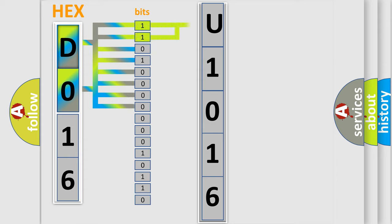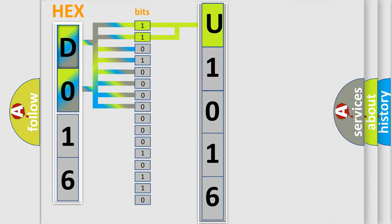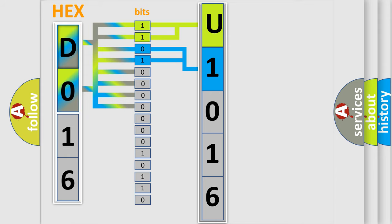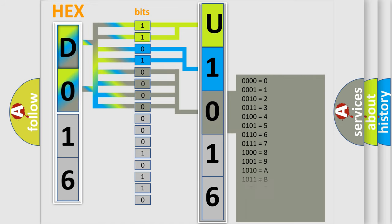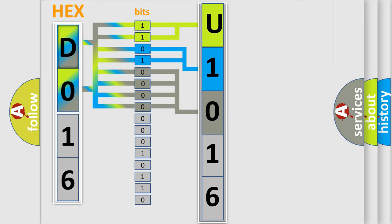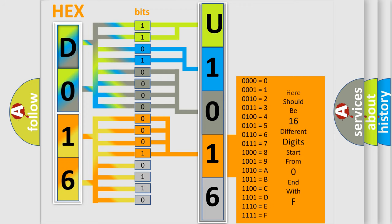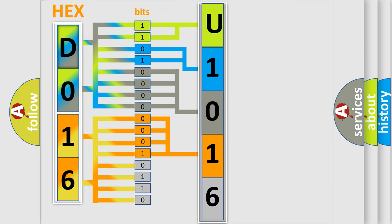By combining the first two bits, the basic character of the error code is expressed. The next two bits again determine the second character. The last four bits of the first byte define the third character of the code. The second byte is composed of a combination of eight bits. The first four bits determine the fourth character of the code.